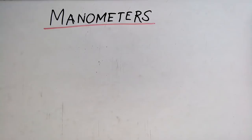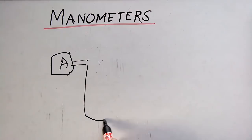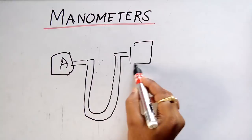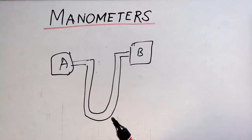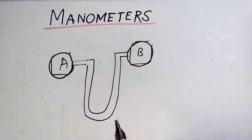Manometers are devices used to measure the pressure difference between two points. Suppose you have a system A and you want to find the pressure difference between system A and B. This A and B represents pipes and you need to find the pressure difference between these two points. That is why you choose manometers.